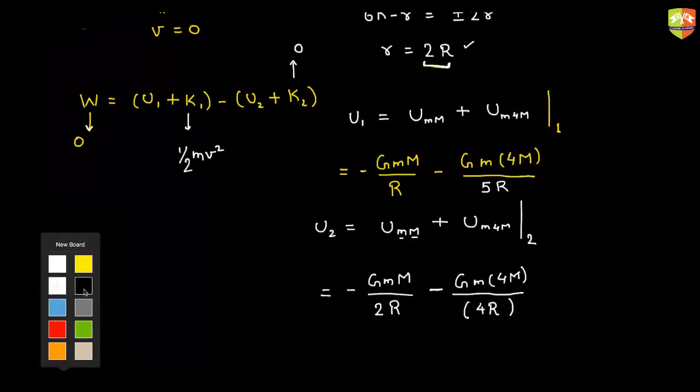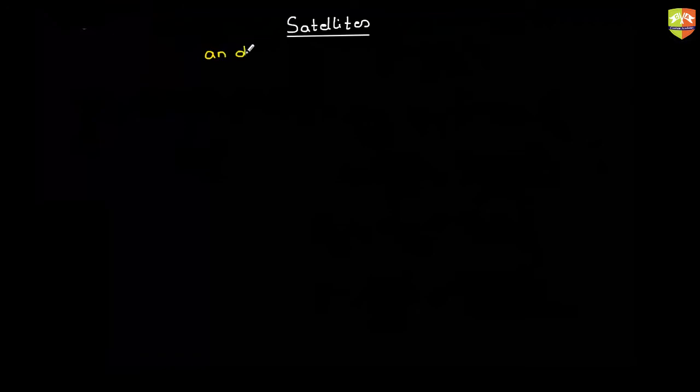Next, let us talk about another very important concept in this chapter — satellites. So today we'll be talking about satellites as the last topic. What are satellites? Satellites are the objects or a body that revolves around a planet. And what is a planet? A planet is an object that revolves around the Sun. Okay, so it's just a definition.